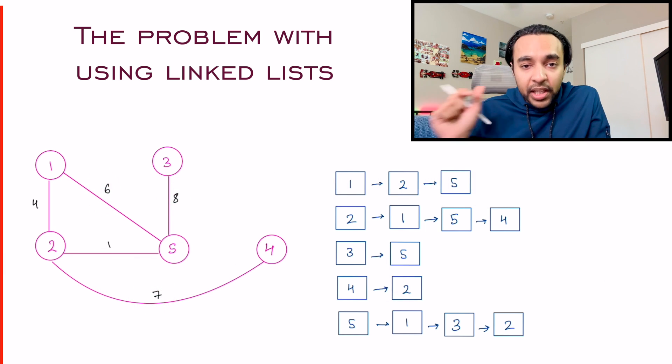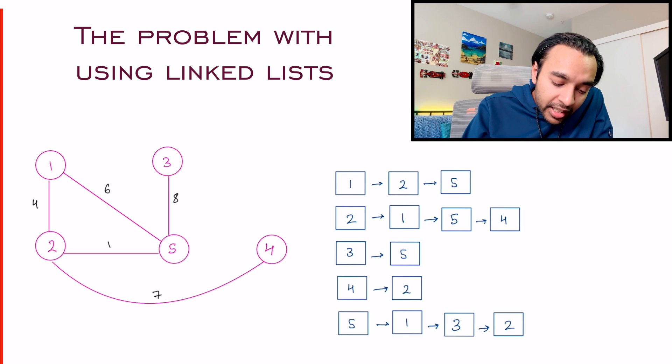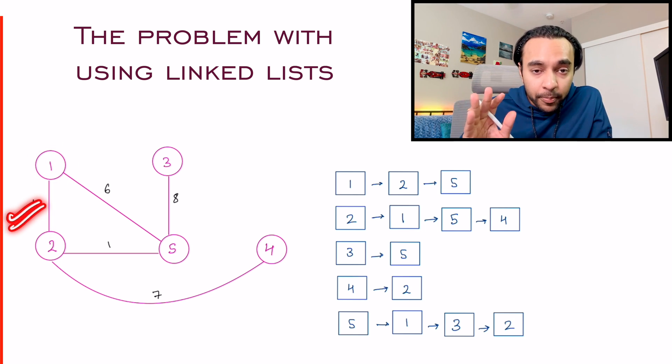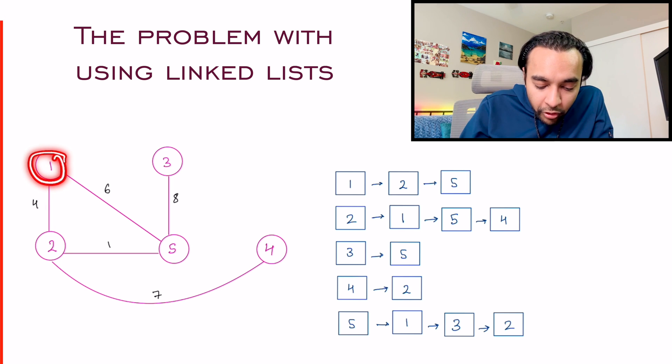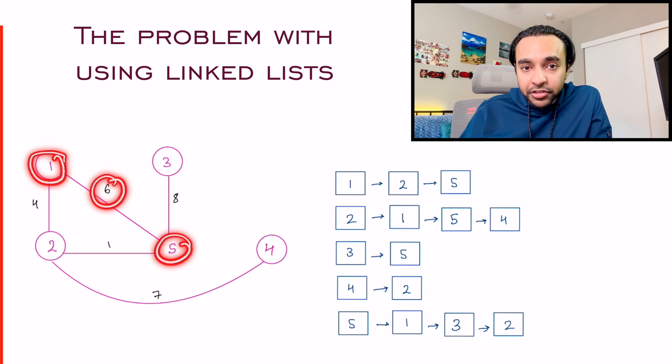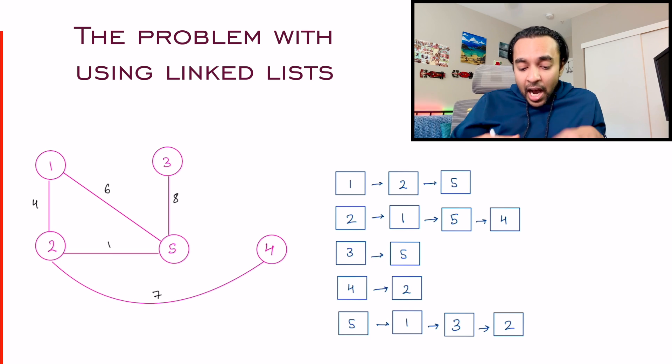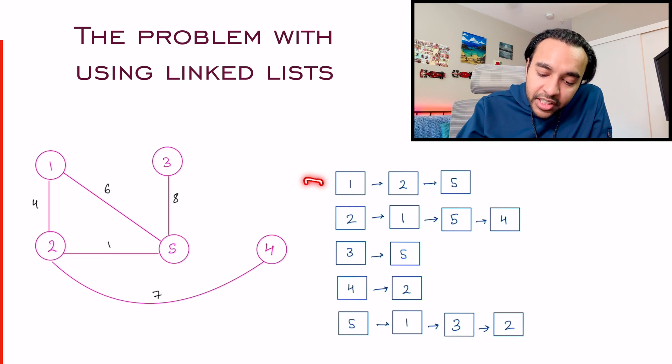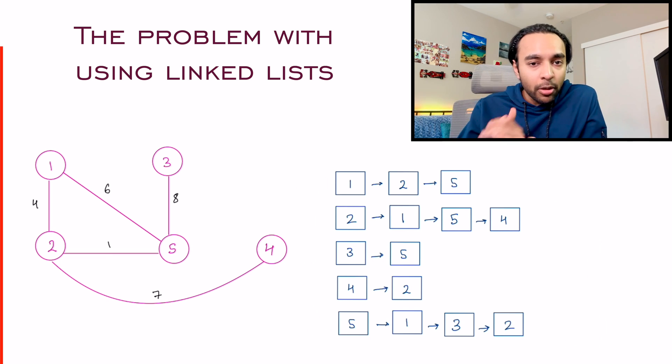And this weight could mean anything. It could simply mean that going from node one to node two will cost you four and going from node one to node five is going to cost you six.